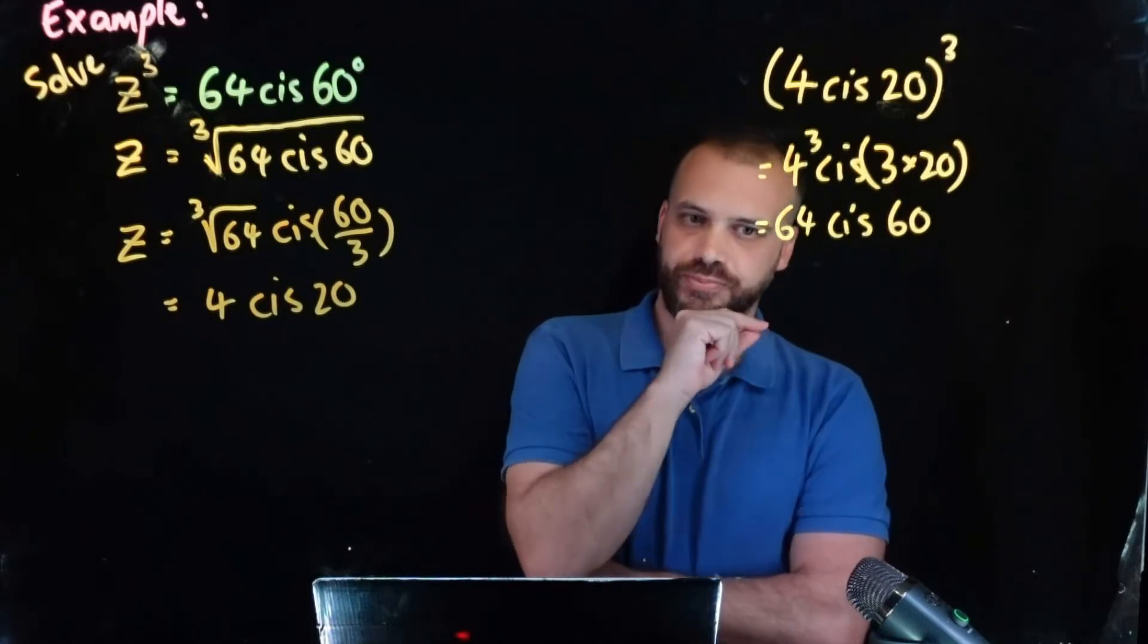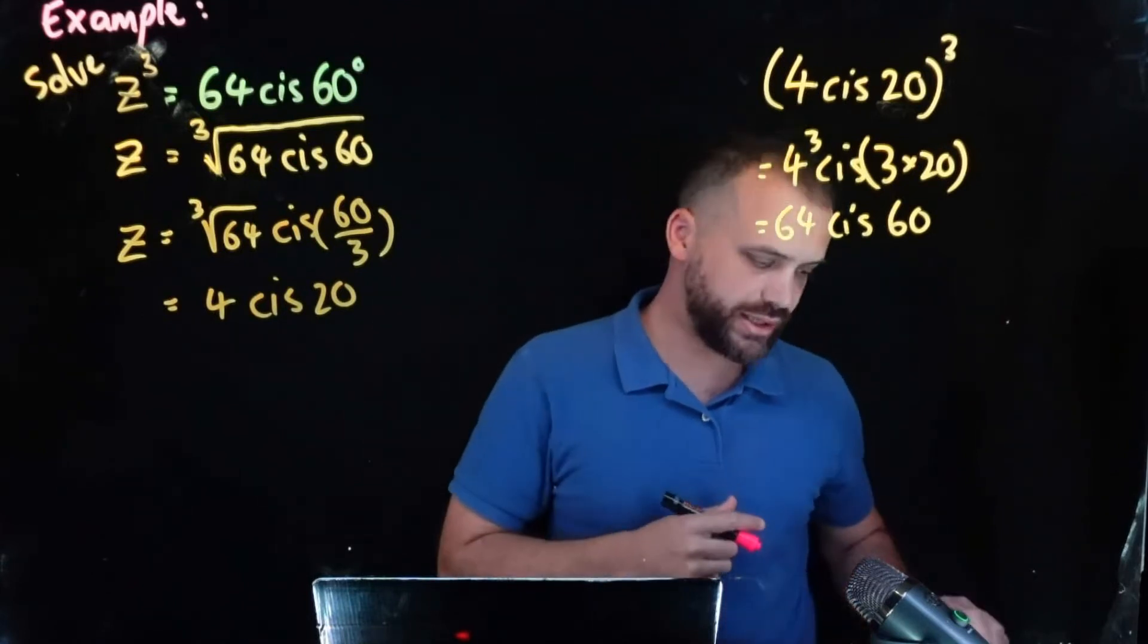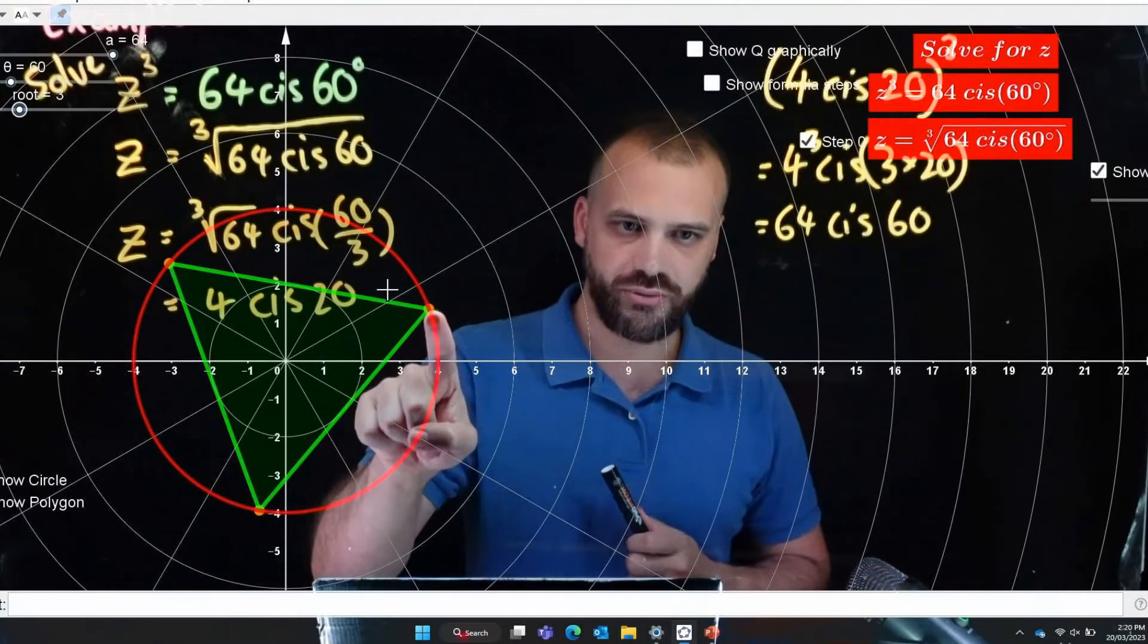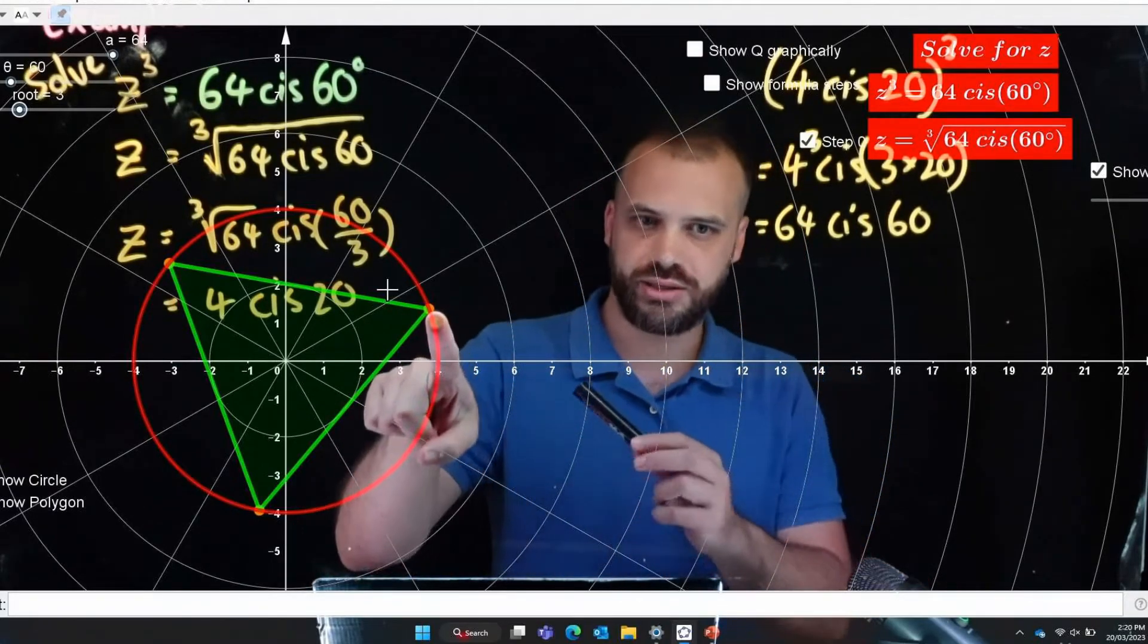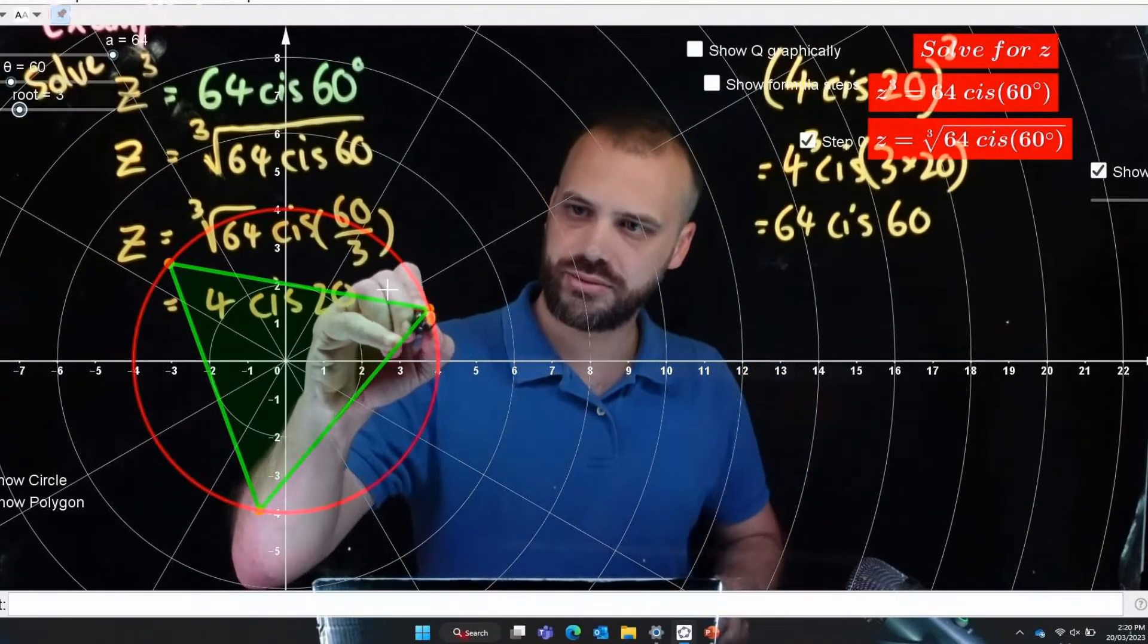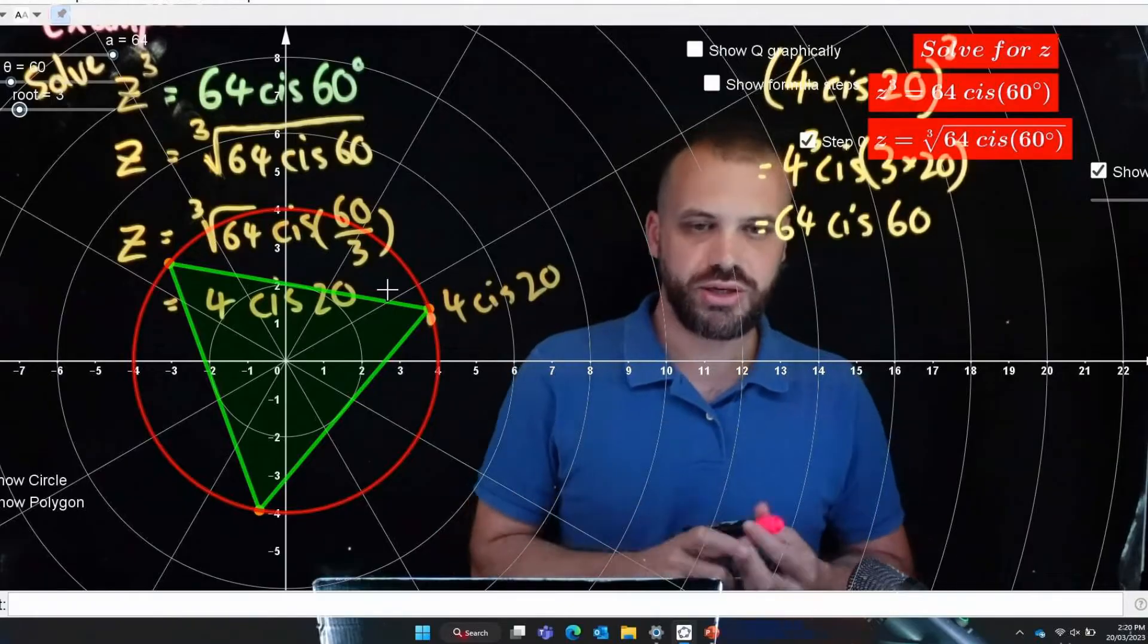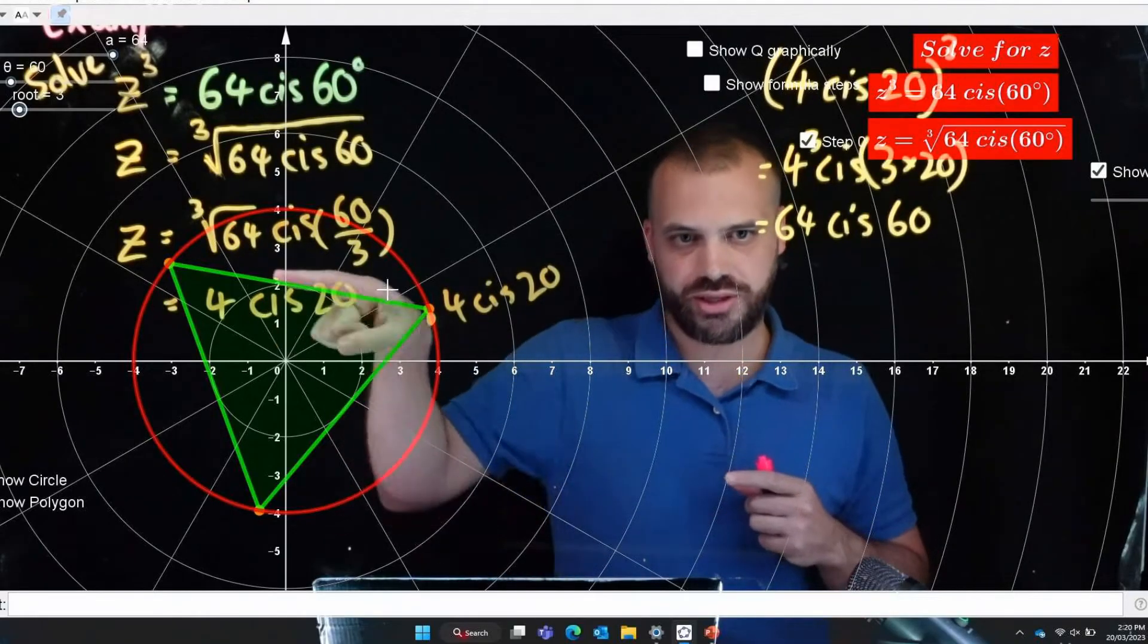One solution but I already sort of let the cat out of the bag and I said we're going to get three solutions, one of which is this one here. This one right here is four cis 20. So what are those other solutions?